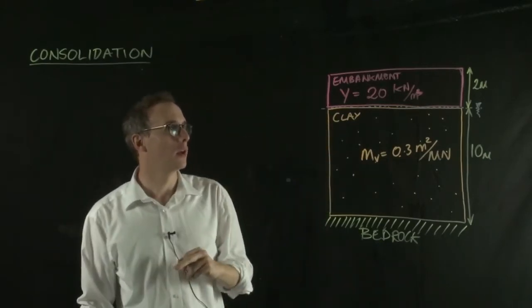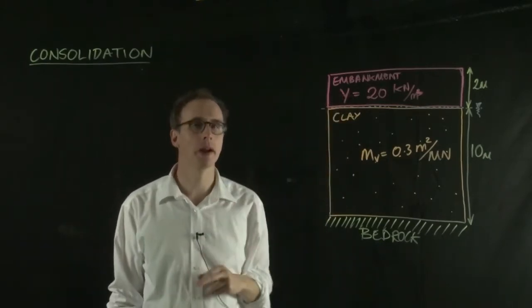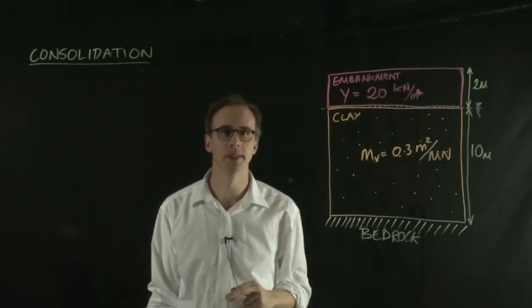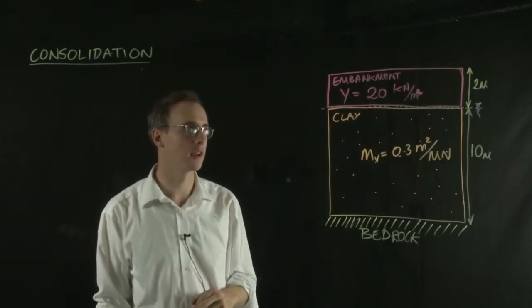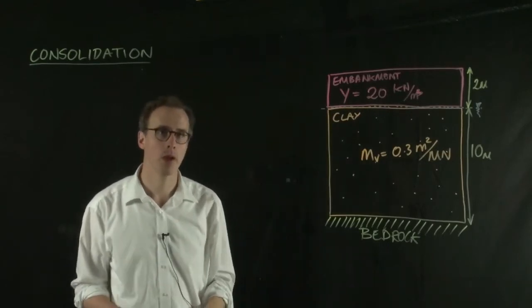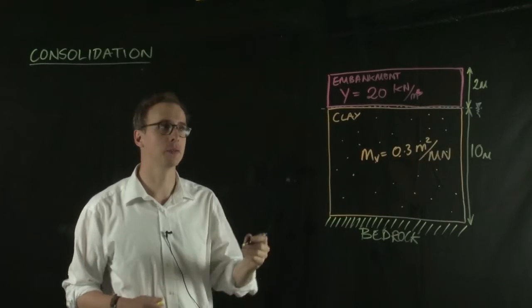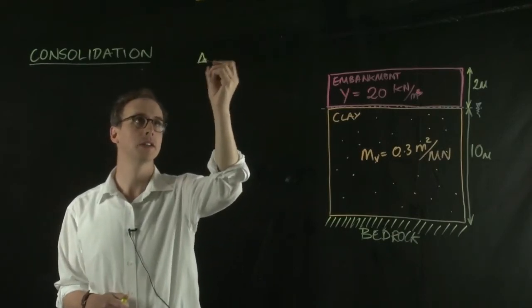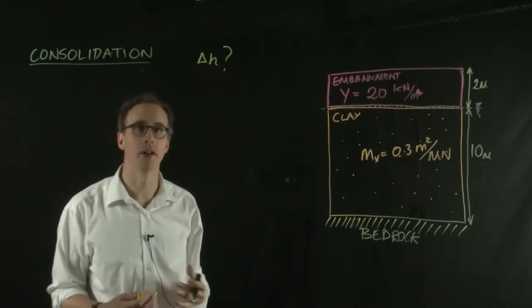Now, what would happen if we put an embankment, let's say 2 meters of embankment, over the top of this clay layer with a known unit weight? The question is how much settlement would we get? What is delta H? That's what we're trying to figure out.